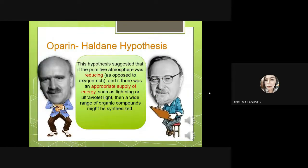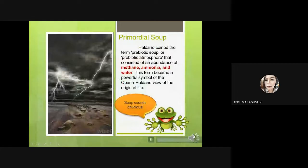Their hypothesis suggested that if the primitive atmosphere was reducing — as opposed to oxygen-rich — and if there was an appropriate supply of energy such as lightning or ultraviolet light, then a wide range of organic compounds might be synthesized. The Oparin-Haldane hypothesis suggests that life arose gradually from inorganic molecules, with building blocks like amino acids forming first and then combining to make complex polymers. They coined the term 'prebiotic soup,' also known as the prebiotic atmosphere, which consisted of an abundance of methane, ammonia, and water.